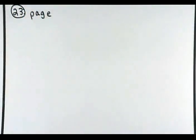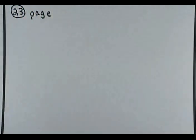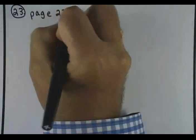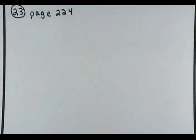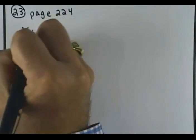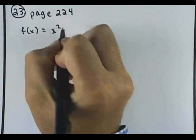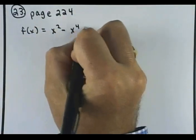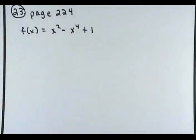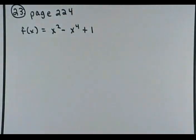Number 23 on page 224, what we've got here is they give you f of x equals x squared minus x to the fourth plus 1. And what's the first thing we said you want to test for here? Even.